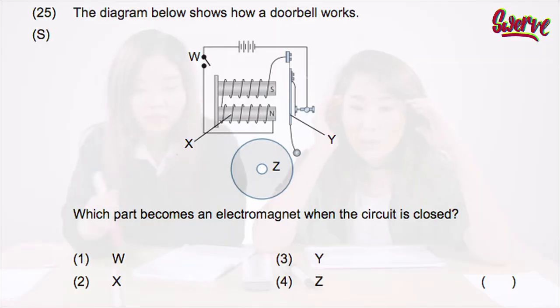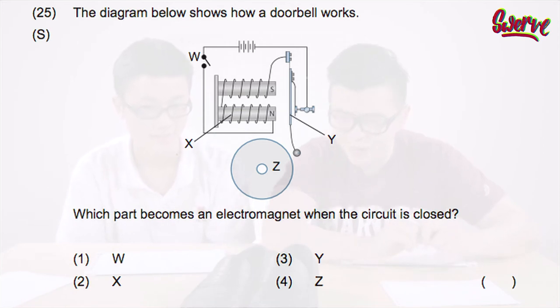The diagram below shows how a doorbell works. Which part becomes an electromagnet when the circuit is closed? Why do you need to know this at like 12? Nothing is going through my mind! Who cares about doorbells when you're 12? You just press it and be like, 'Mummy, I'm home!' How did I even pass PSLE? No cheating! I saw how you drew it so I just copied. Is this the right time to pray? In ancient hieroglyphics, this actually means three.